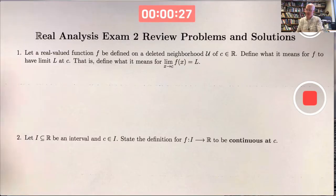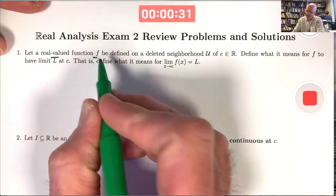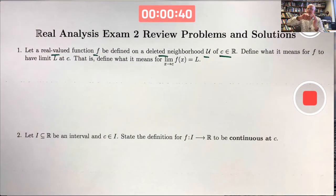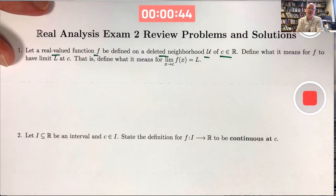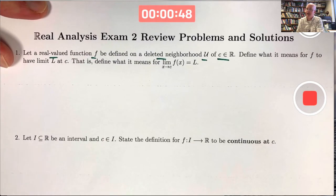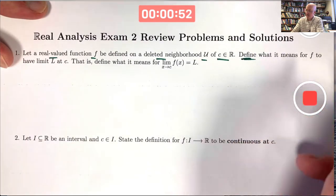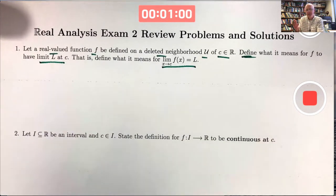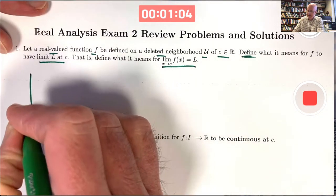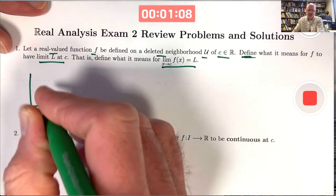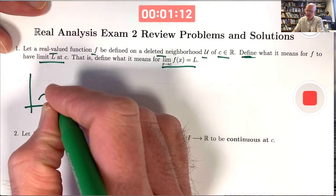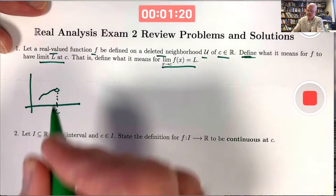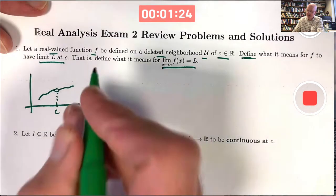We start with the definition of the limit of a function. We have a real-valued function f defined in what's called a deleted neighborhood u of some point c in R. You can think of u as an open interval that has c inside, except you take c out — you delete c from u. The reason we do this is the function doesn't have to be defined at c for the limit as x approaches c to exist.